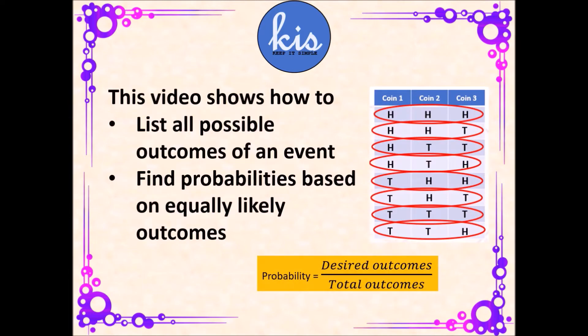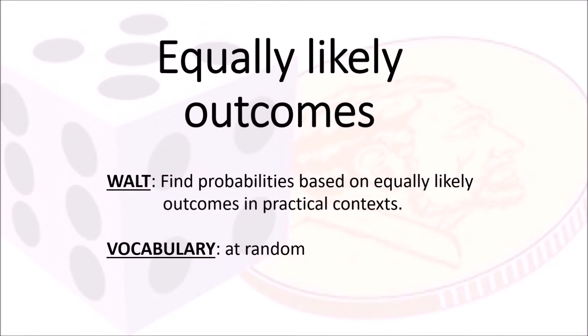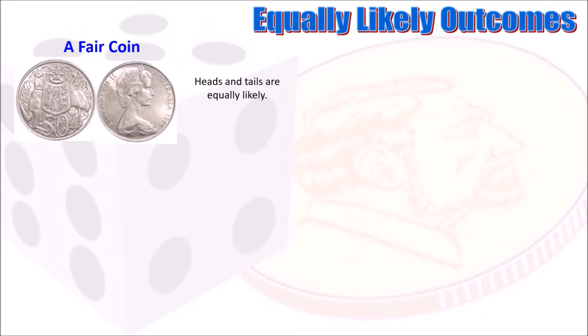Good morning students, welcome to our lesson for today. In this lesson we will find probabilities based on equally likely outcomes in practical contexts. We'll be using the keyword 'at random,' which means choosing without any preference.